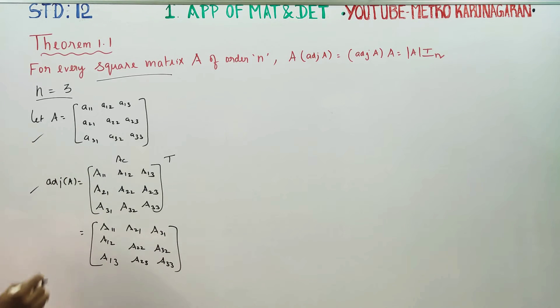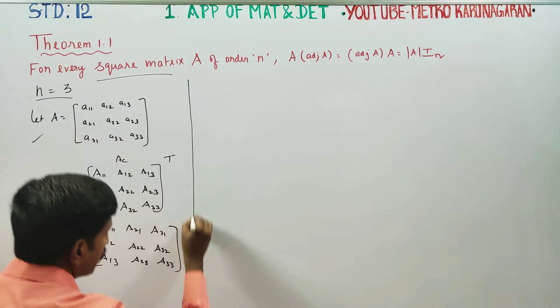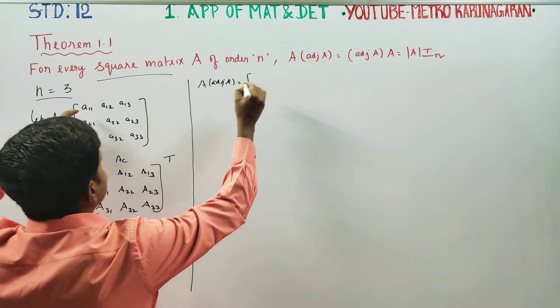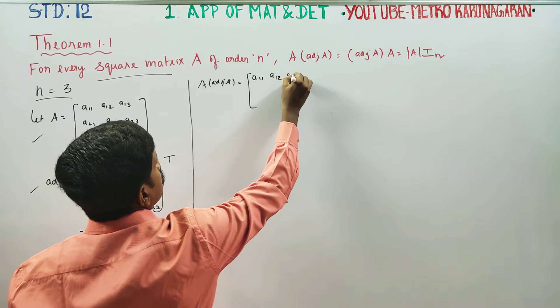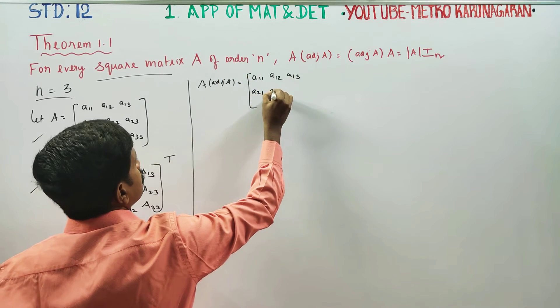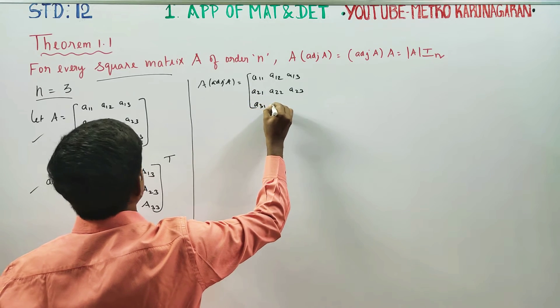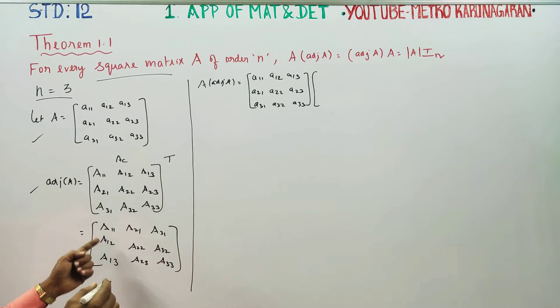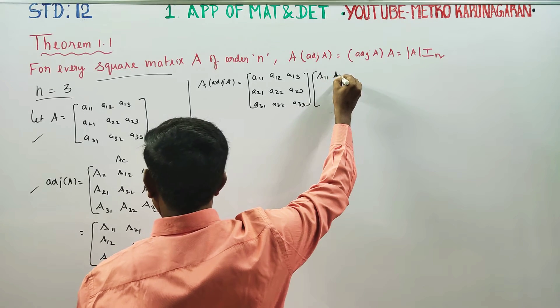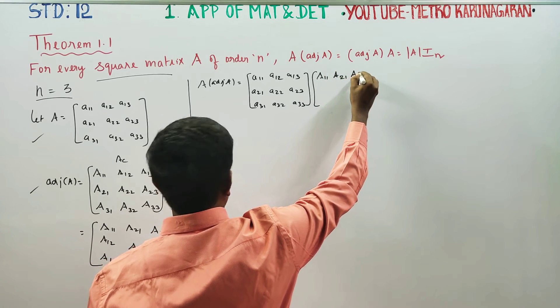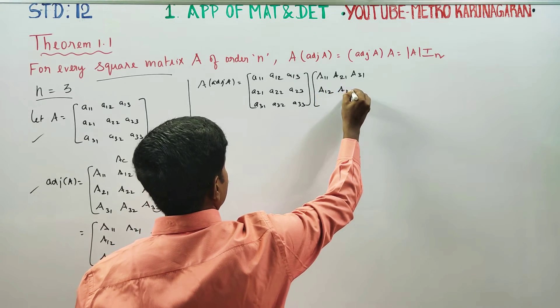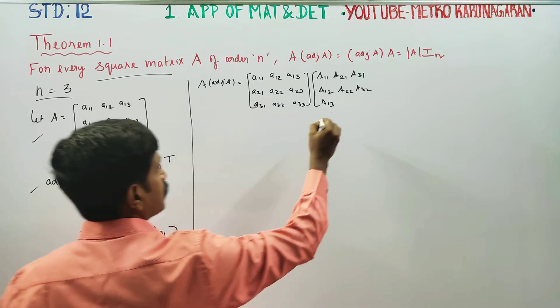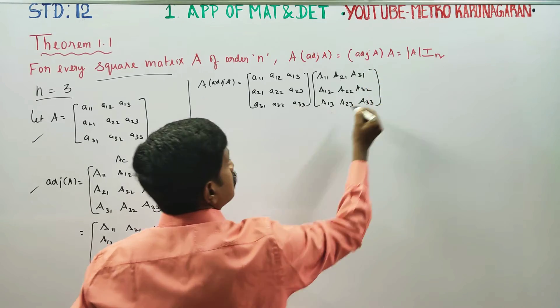Adjoint matrix ready. The cofactor matrix is: capital A11, A12, A13, A21, A22, A23, A31, A32, A33. After transpose: A11, A21, A31, A12, A22, A32, A13, A23, A33.